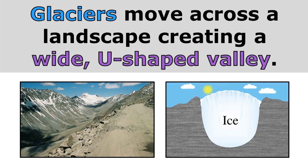Glaciers are huge masses of slowly moving ice. Glaciers move across a landscape creating a wide, U-shaped valley. Wide valleys with steep sides and rounded bottoms — valleys that have that U shape — were formed by glaciers.